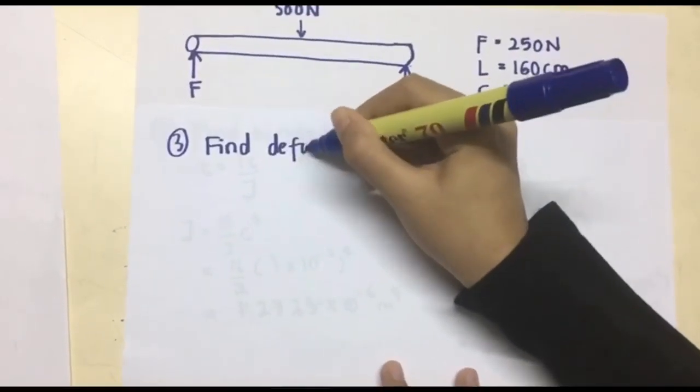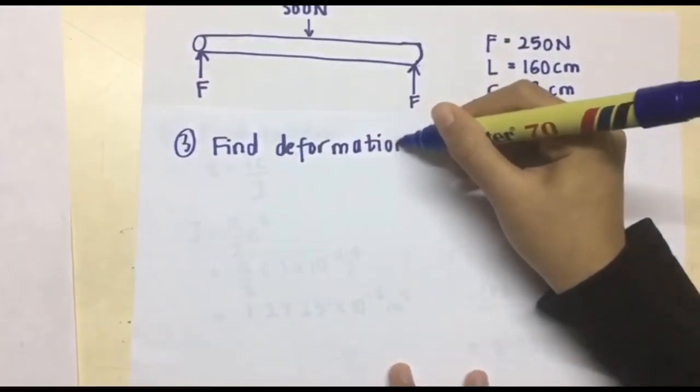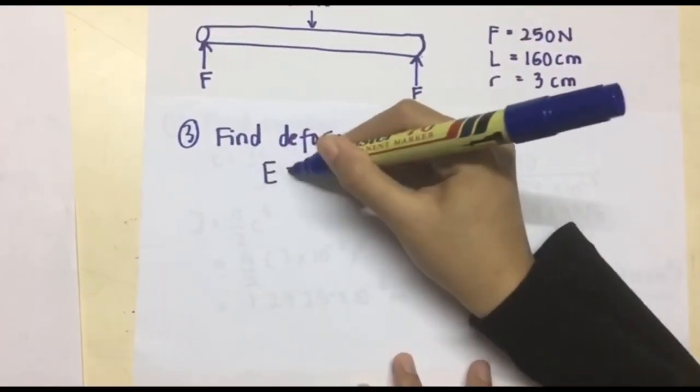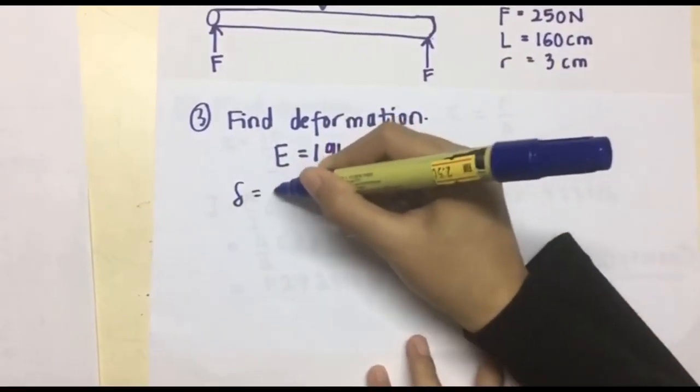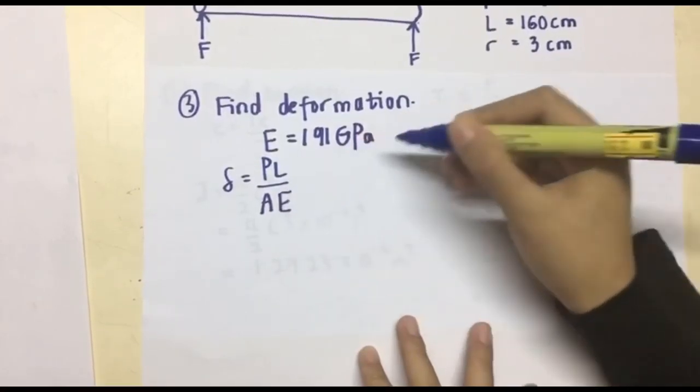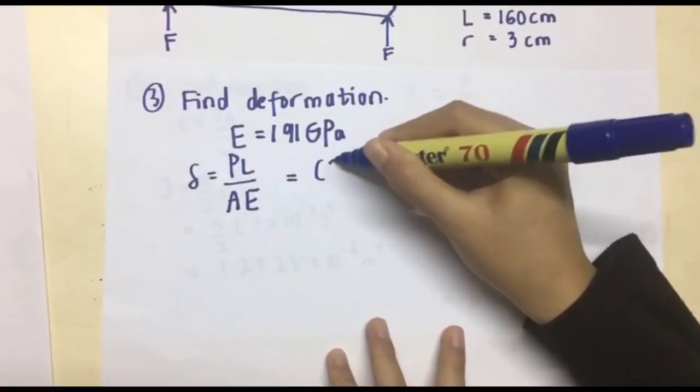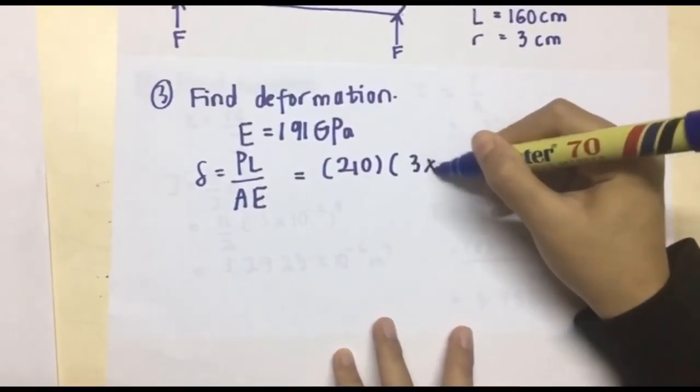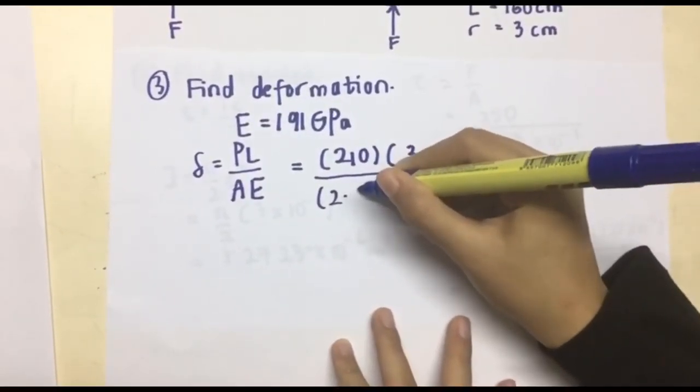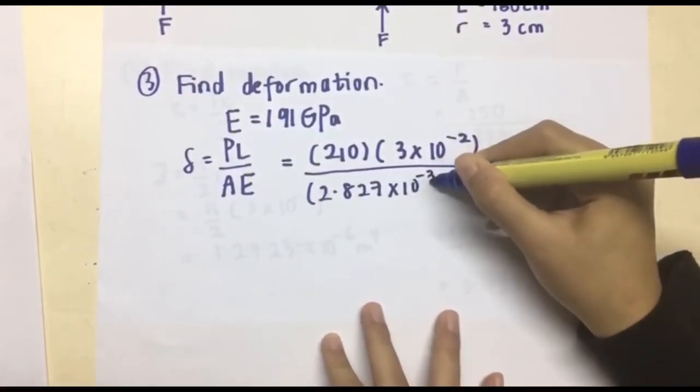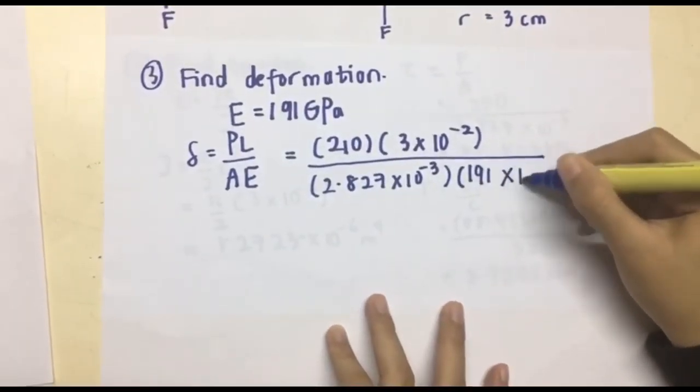Last but not least, we want to find the deformation of the rod, assuming that the rod is a metal, so the Young's modulus is 191 GPa. Okay, for the formula, deformation equals to PL over AE, P is the force applied, L is the length, E is the area of the rod, which we had calculated earlier, and E is the Young's modulus of the rod.